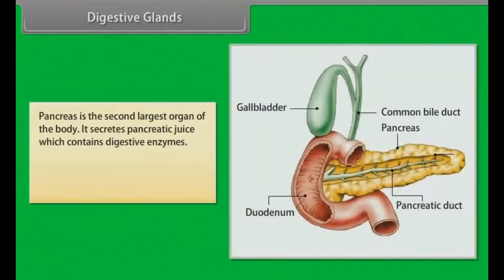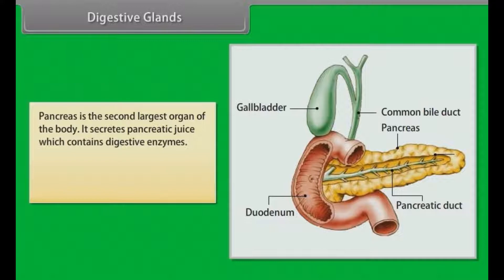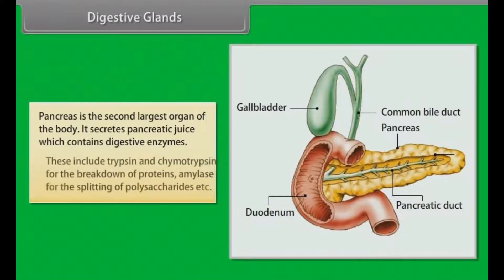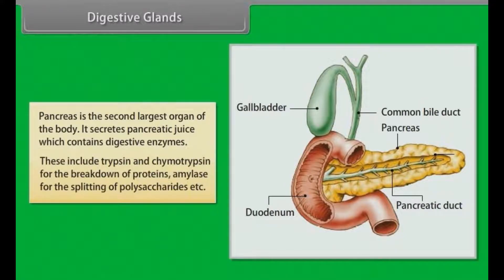The pancreas is the second largest organ of the body. It secretes pancreatic juice which contains digestive enzymes. These include trypsin and chymotrypsin for the breakdown of proteins, and amylase for the splitting of polysaccharides.